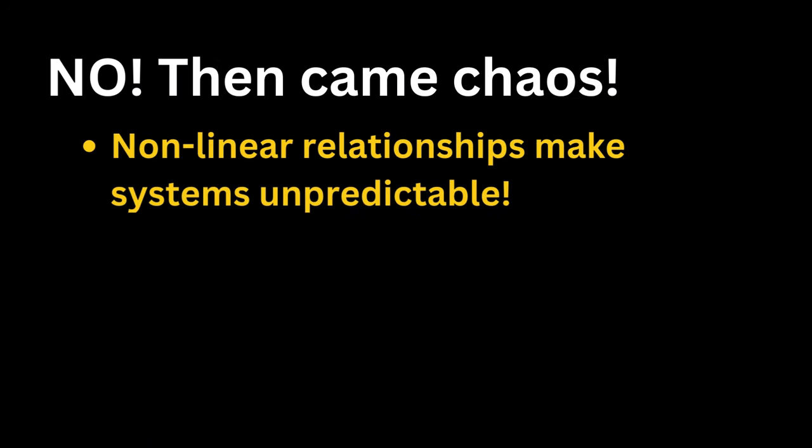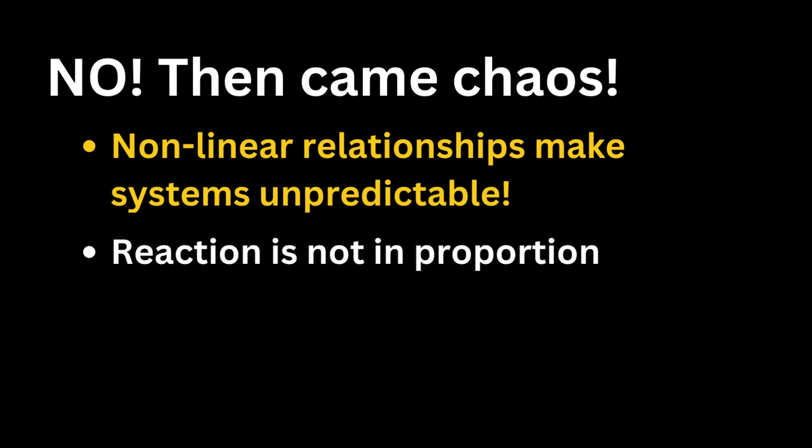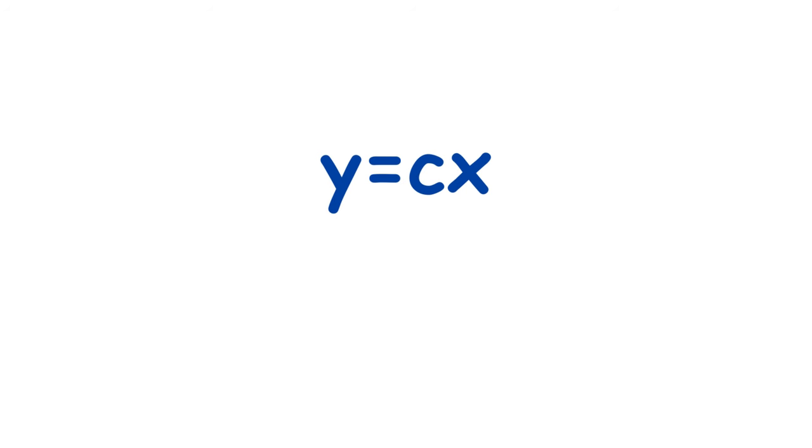Chaos theory comes about as the result of nonlinear relationships between components and systems. What this means is that some parts of some systems depend on other parts in a non-proportional way. Something that is proportional would have an equation that looks like this. And if I plot this, it looks like this.